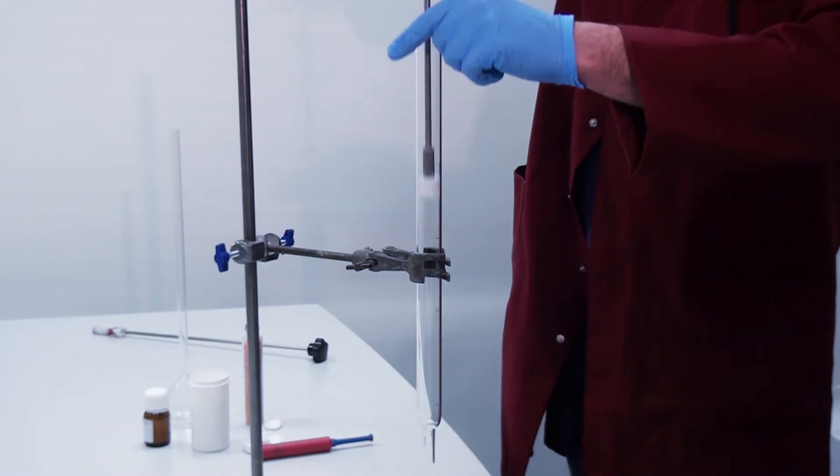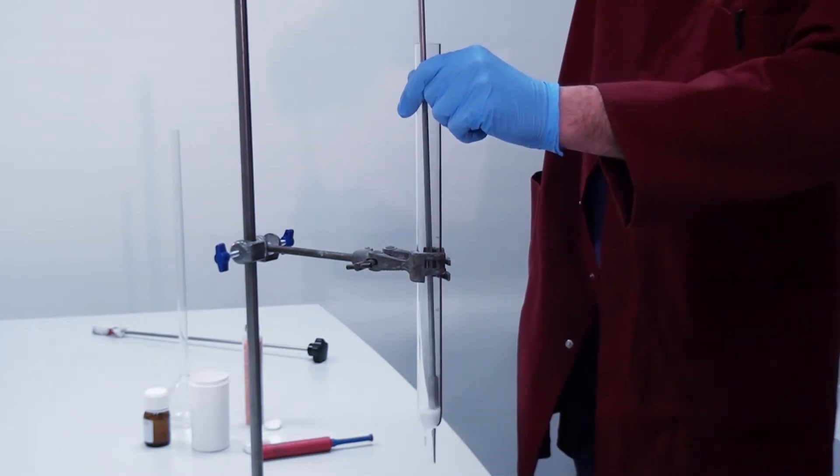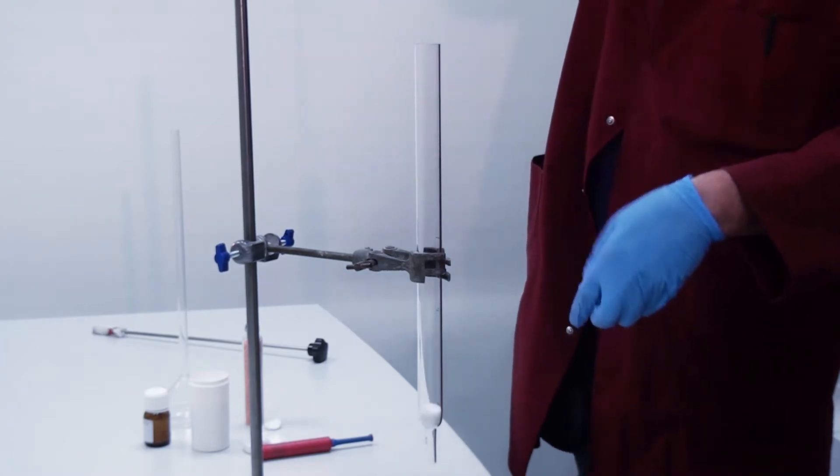Before adding the reagents, it is helpful to mark up the heights of the individual zones using a marker pen, then clamp the tube vertically.